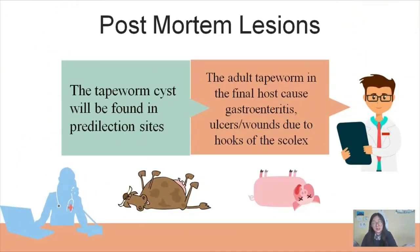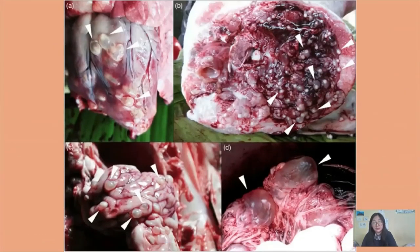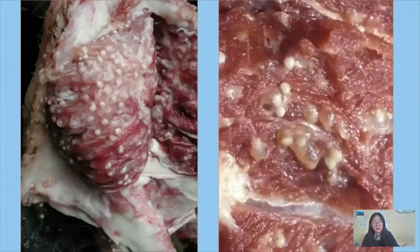Now the postmortem lesions. The tapeworm cysts will be found in predilection sites. This is the most important postmortem finding which can help in confirming the disease. The adult tapeworm in the final host causes gastroenteritis, ulcers and wounds due to hooks of the scolex. These are images of the cysts found in different organs — you can see cysts in heart, brain, and other organs, in both pigs and cattle.